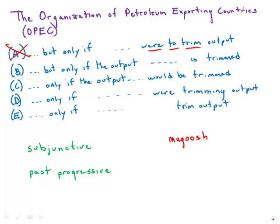In B and C, we get 'the output is trimmed' and 'the output would be trimmed.' Both of those are passive. Almost 100% of the time, the passive voice is incorrect on the GMAT. There are some rare exceptions, but in general, effective writing is clear, active, and direct. So both B and C are wrong. Incidentally, 'would be trimmed' is actually the subjunctive passive — even worse.